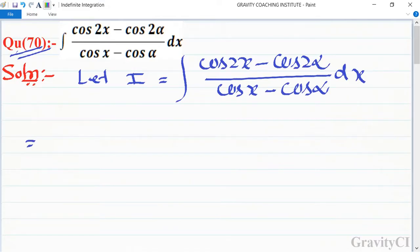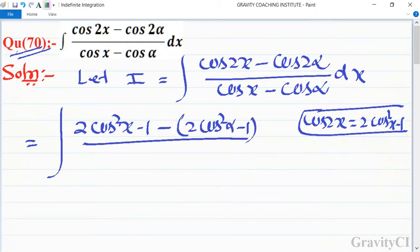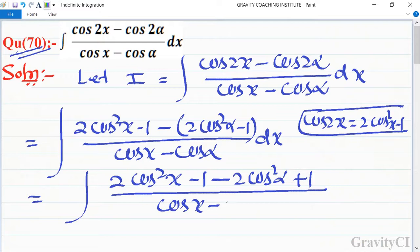dx is equal to, here we will use the cos 2x formula which is 2 cos square x minus 1. Here we will write cos 2x as 2 cos square x minus 1, and cos 2 alpha as 2 cos square alpha minus 1 upon cos x minus cos alpha dx. So this is equal to 2 cos square x minus 1 minus 2 cos square alpha plus 1 upon cos x minus cos alpha.